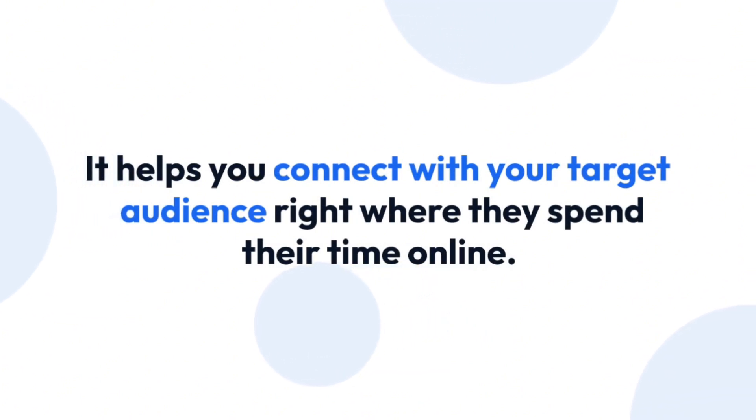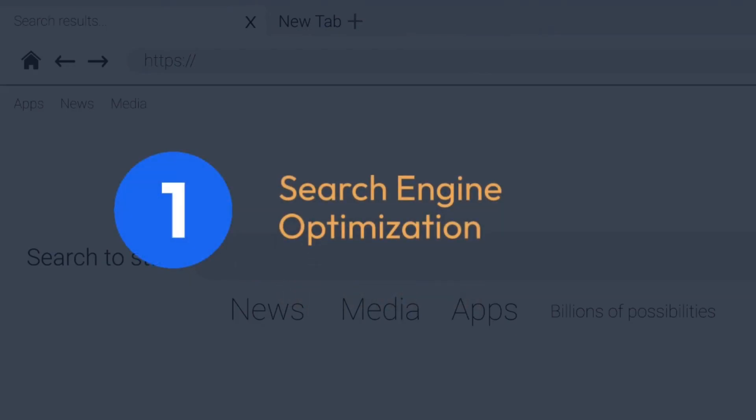First, search engine optimization (SEO) is the practice of orienting your website to rank higher on a search engine results page (SERP) so that you receive more traffic. The aim is typically to rank on the first page of Google results for search terms that mean the most to your target audience.